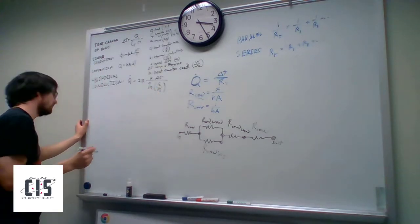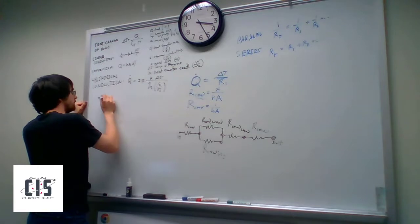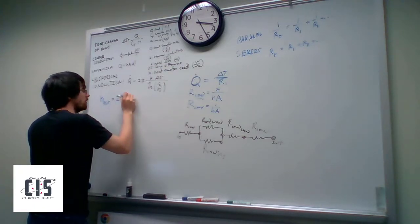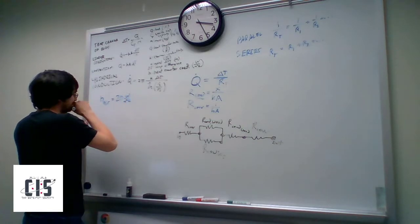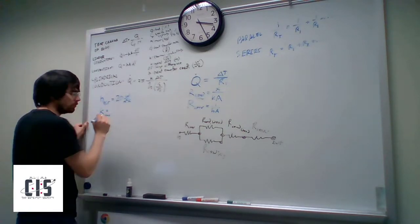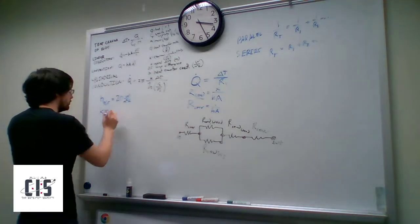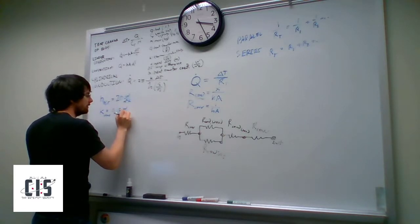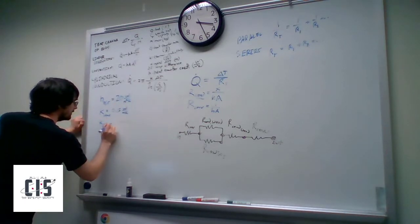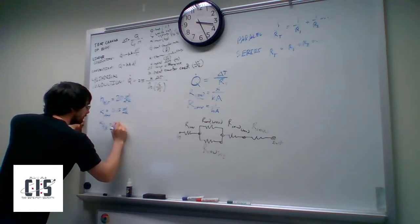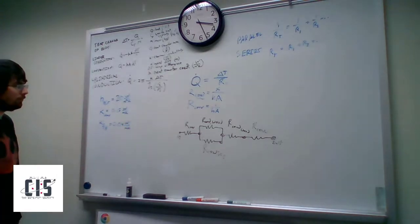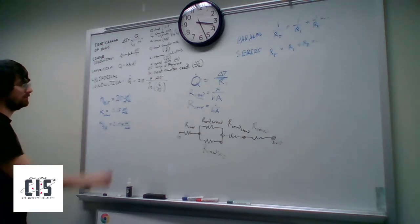Now writing out the constants we'll use. H of the air — the heat transfer coefficient — on both sides is 20 watts per meter squared Kelvin. Thermal conductivity of wood: 0.15 watts per meter Kelvin. And for fiberglass insulation: 0.04 watts per meter Kelvin. Let's calculate the heat transfers.